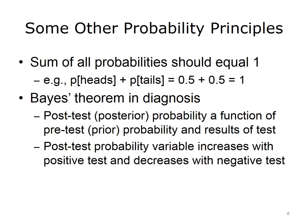Another principle to consider when talking about probability is that the sum of all probabilities should equal 1. For example, with a coin flip, the probability of heads or tails is each 0.5, which adds up to 1. When we calculate the probability of a disease with information from a diagnostic test, we use Bayes' theorem, which is a statistical formula that gives us the post-test probability, sometimes called the posterior probability — in this case, the post-test probability of a disease being present. Bayes' theorem has many uses in addition to medical diagnosis. The post-test probability is a function of both the pre-test probability and the results of the test. Bayes' theorem tells us that it's important to know the prior or pre-test probability, because that information is used to calculate a new probability when test results are added.